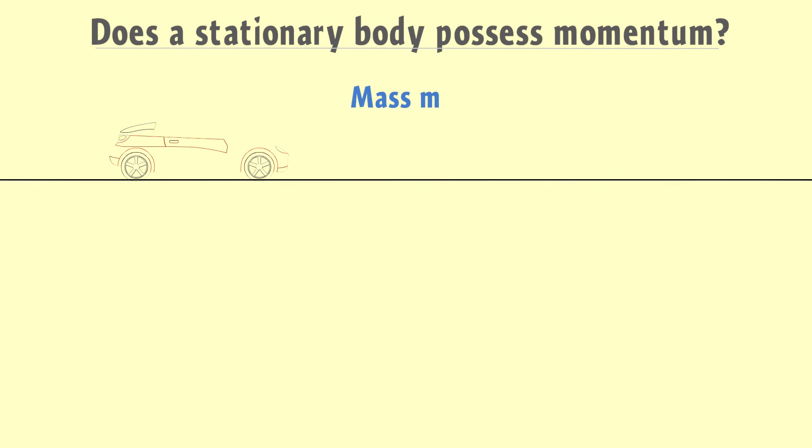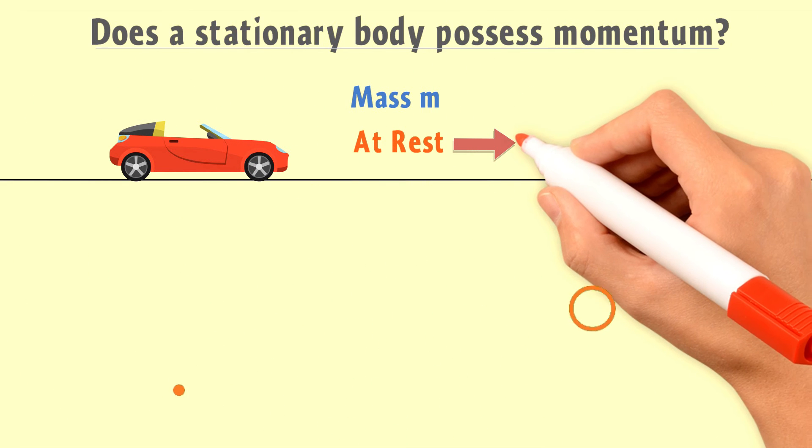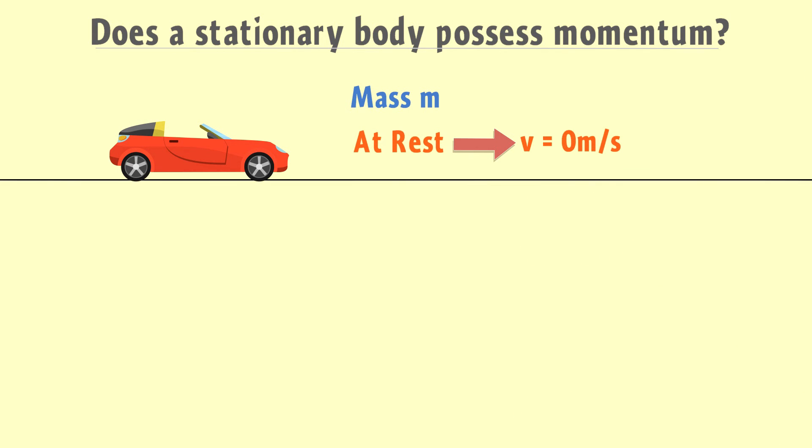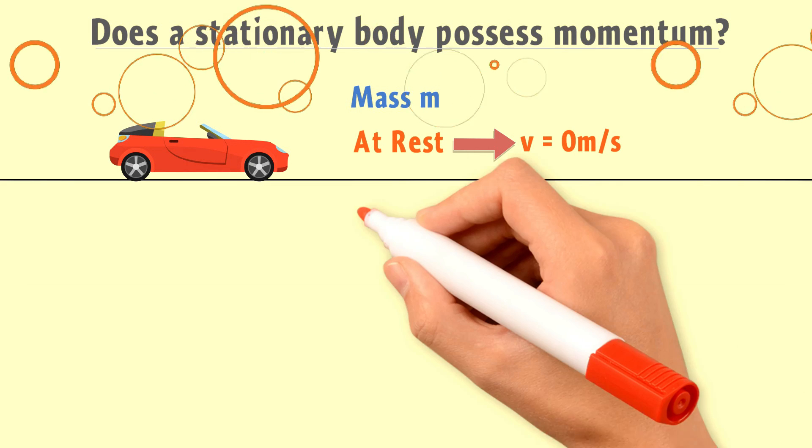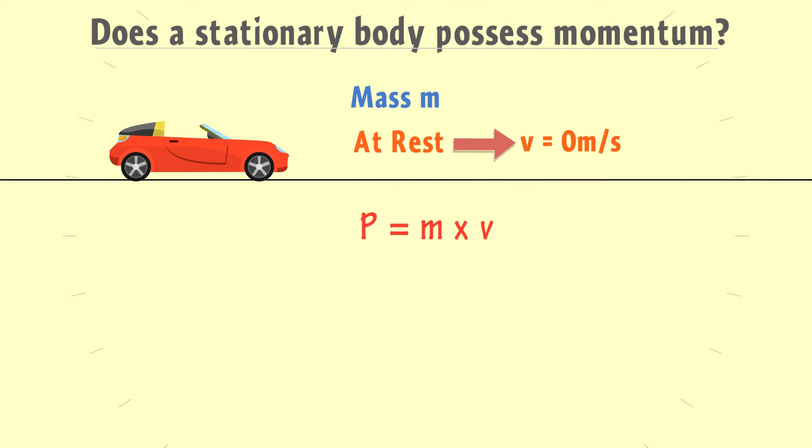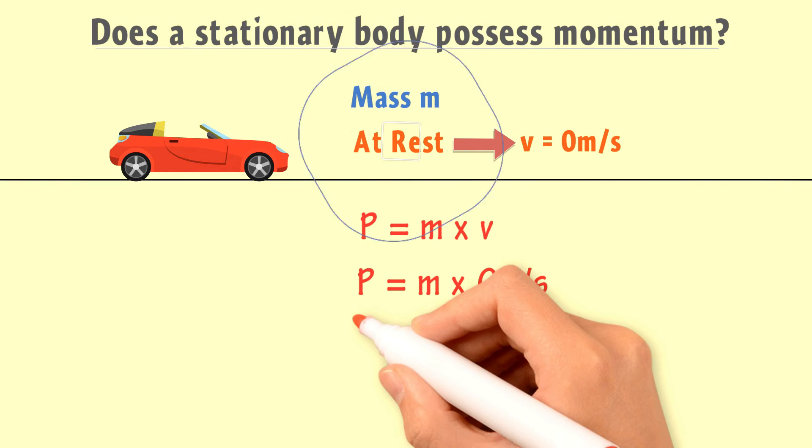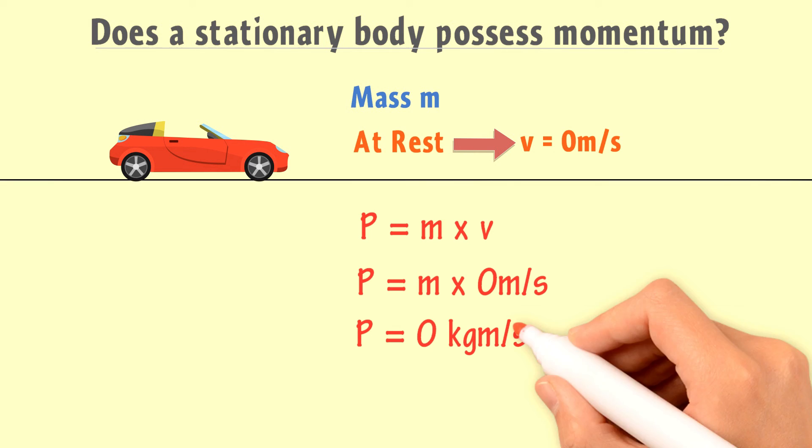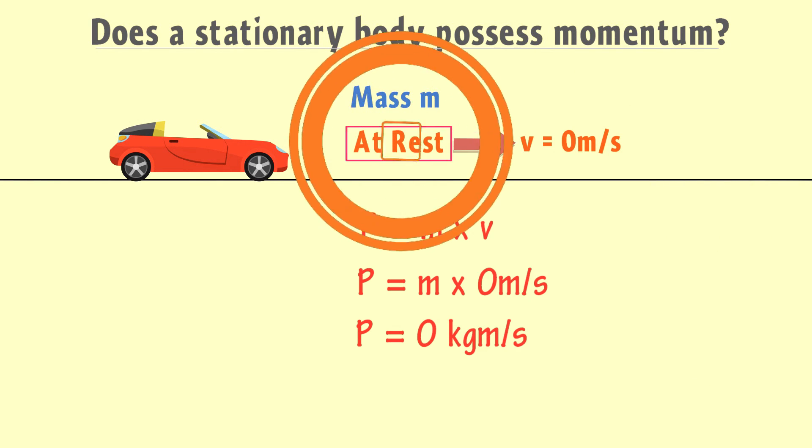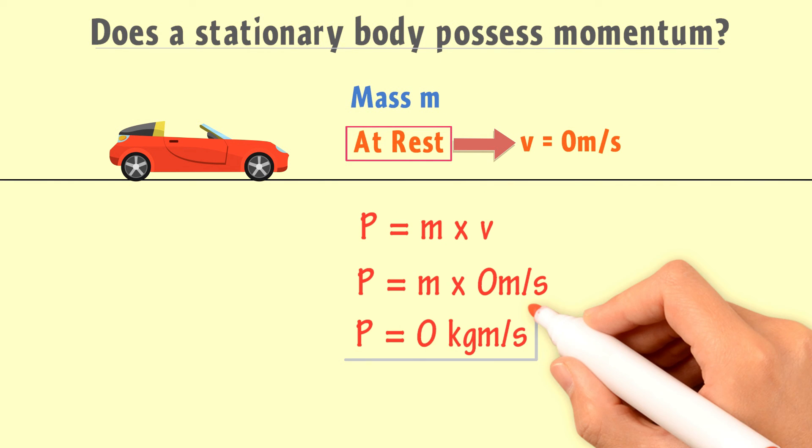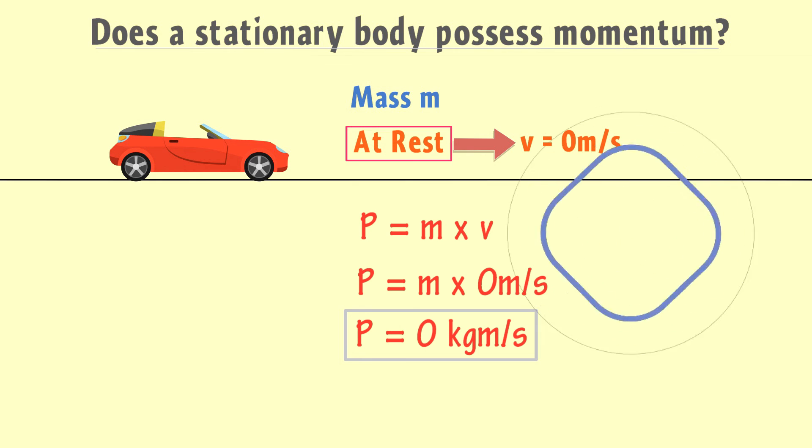If a car of mass m is stationary or at rest, its velocity v is equal to 0 meter per second. Hence, its momentum equals P equals m times v. Thus, P equals m times 0, or P equals 0 kg meter per second. It shows that if an object is at rest, its momentum P would be 0. Or we can say that the momentum P of an object would be 0 if the body is at rest.